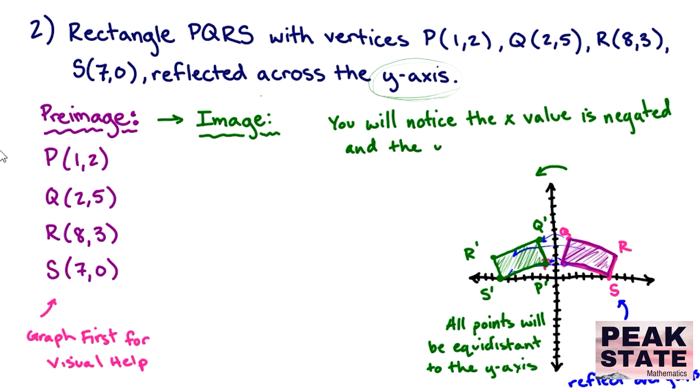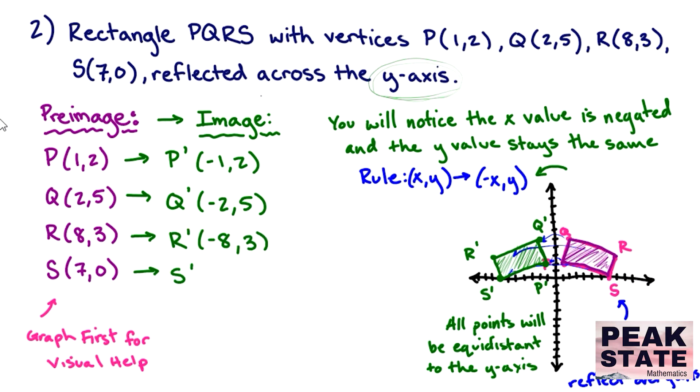Because you know that's what we're noticing—we're noticing that the x values get negated and that our y values are going to stay the exact same. So let's write that down kind of as a general rule. For this example, that means that your (x,y) coordinate points are going to go to a (-x,y) coordinate point. So P prime will switch to (-1,2), Q prime is going to go to (-2,5), R prime is at (-8,3), and S prime is at (-7,0). This is your final answer.